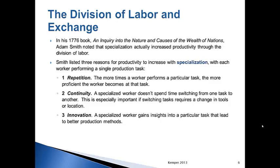Second is continuity. A specialized worker doesn't spend time going from one task to another. You see this most commonly in assembly lines. Henry Ford is famous for designing the assembly line, making it so that one person would focus on one task and another person would focus on a completely different task, and by the end of all the tasks, a car was put together. This made it much faster to produce cars, which in turn lowered the cost and prices of cars, and the more people that were able to buy cars, the higher the demand. Today most families have an average of two to two-and-a-half cars.